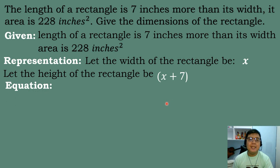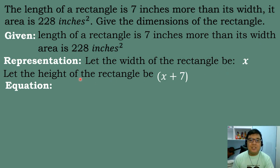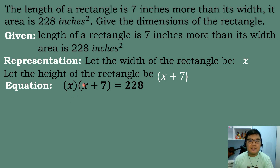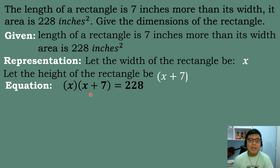Then we will form an equation. Since we are dealing with the area of a rectangle, we need to use the formula: area equals length times width. So our equation will be x (the width) times the quantity x plus 7 (the length) equals 228, which is the area of the rectangle.